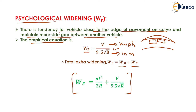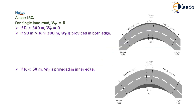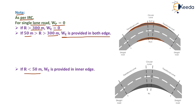As per Indian Road Congress, for single lane roads, psychological widening equals zero. If R is greater than 300 meters, extra widening equals zero — meaning no extra widening is needed. If the radius is between 50 meters and 300 meters, extra widening is provided on both edges, that is WE/2 on each side. If the radius is less than 50 meters, extra widening is provided on the inner edge only.